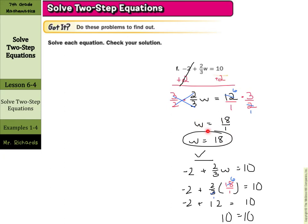And when you go to check your work, rewrite the original equation, substitute in the 18 for w. I cross-simplified again when I was multiplying. We get negative 2 plus 12, and that does equal 10. So 10 equals 10, so our solution is w equals 18.